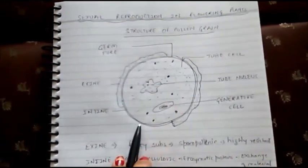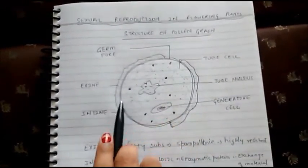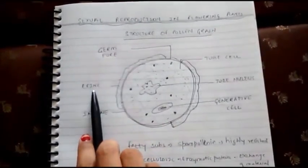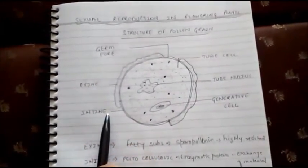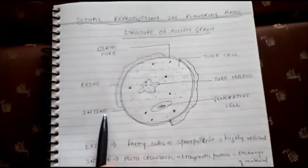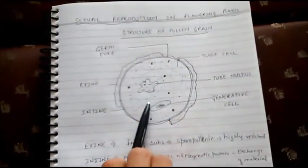As you can see in this diagram, the structure of pollen grain consists of the outermost layer exine, below that there is intine, and inside the pollen grain.